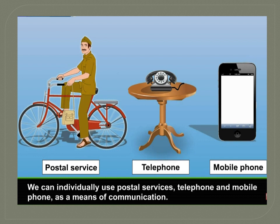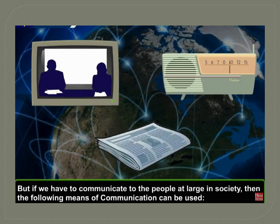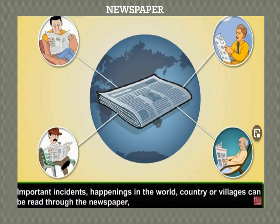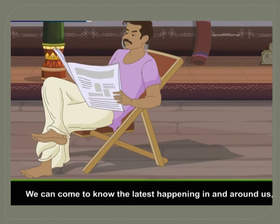We can individually use postal services, telephone, and mobile phone as a means of communication. But if we have to communicate to the people at large in society, then the following means of communication can be used. Important incidents and happenings in the world, country, or villages can be read through the newspapers. We can come to know the latest happenings in and around us with the help of newspapers.